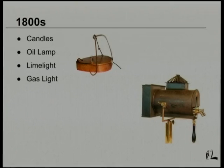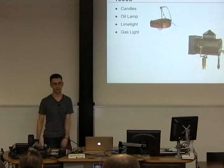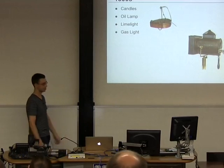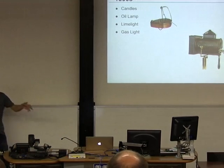Going back to the 1800s, typically the only venues at the time were theaters, and you had things like candles, oil lamps, limelights, and gas lamps. The device up top here is an oil lamp — you flip the little thing up, pour your oil in, light the wick, and it gives you a little bit of light. You'd put these down the front of the stage and have someone to top up the oil and blow them out when the scene changes.